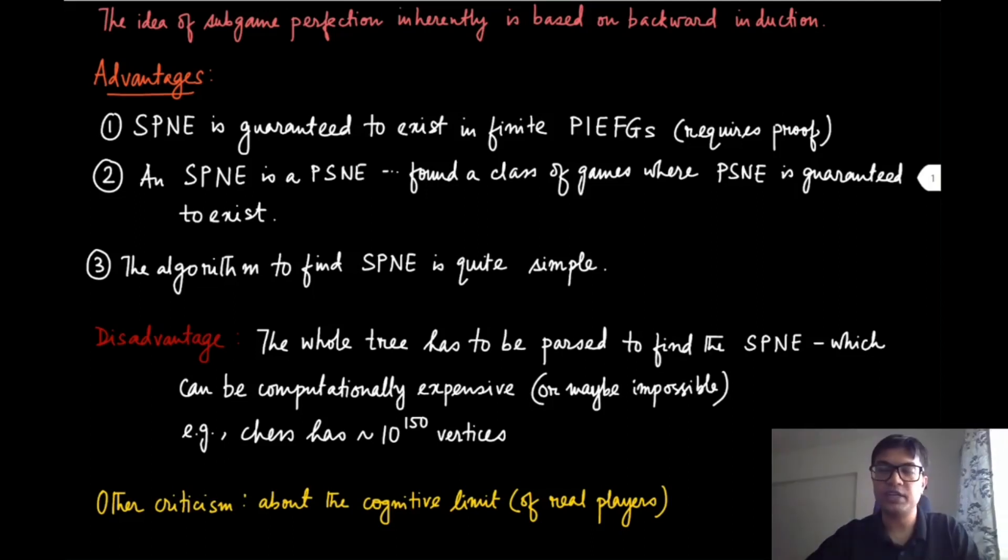If it was possible by some means—maybe some other kind of computational machinery—to traverse all these 10 to the power 150 vertices and do the backward induction to find out the optimal strategy, then we would have solved one of the very early questions that we asked in this course, which is about the result by von Neumann: which of these three statements for chess is true?